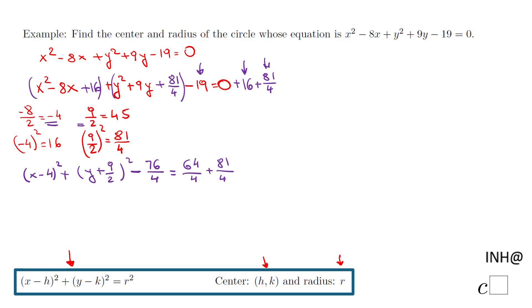Okay, and now what we're gonna do, we want to eliminate this 76/4, so we're gonna add them here and here. So we get (x - 4)² + (y + 9/2)² = and now we have to add those fractions over 4.